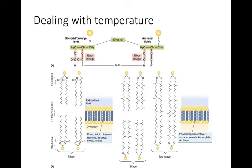Bacteria are unlike humans in that their internal temperature is in part based on the environment they're found in. This means there will be changes to the phospholipid bilayer to maintain homeostasis and fluidity as temperatures fluctuate. As temperatures increase, that increases the movement of the phospholipids, and to reduce fluidity and the movement of molecules through the plasma membrane, bacteria will increase the amount of saturated fatty acids within the membrane.